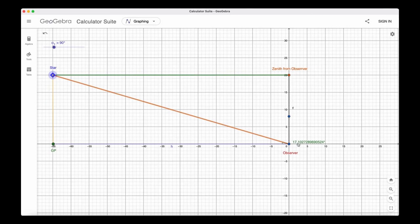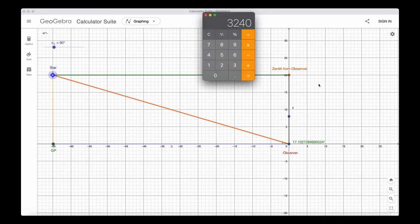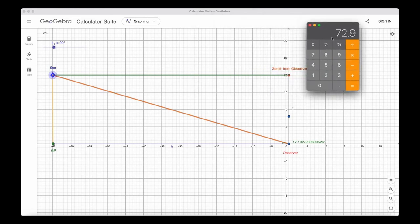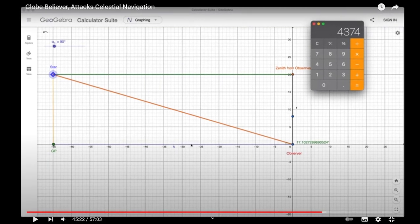He shows a diagram and calculates the distance to the GP of a star using that formula. That distance, in the case of an elevation angle of 17.10 degrees and a zenith angle of 72.9 degrees, comes out to be 70.9 degrees times 60 nautical miles per degree equals 4374 nautical miles.